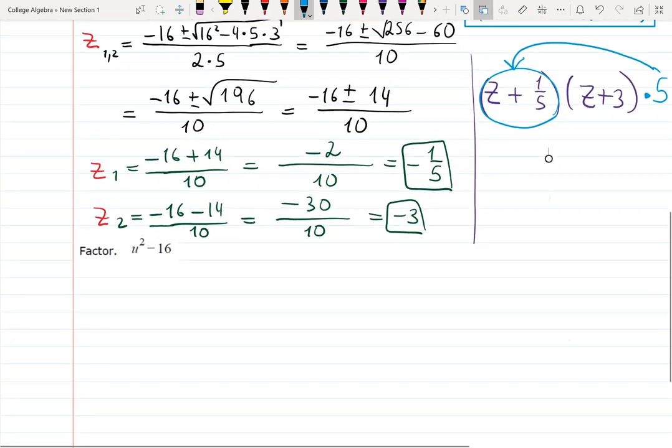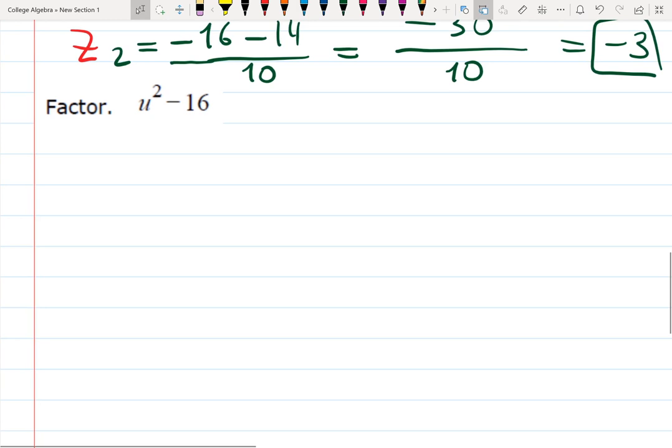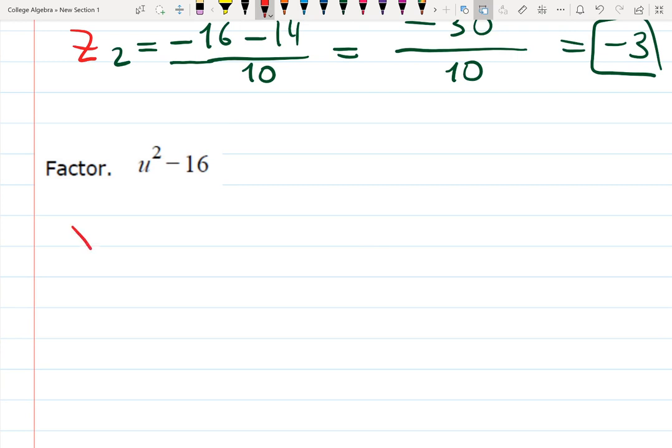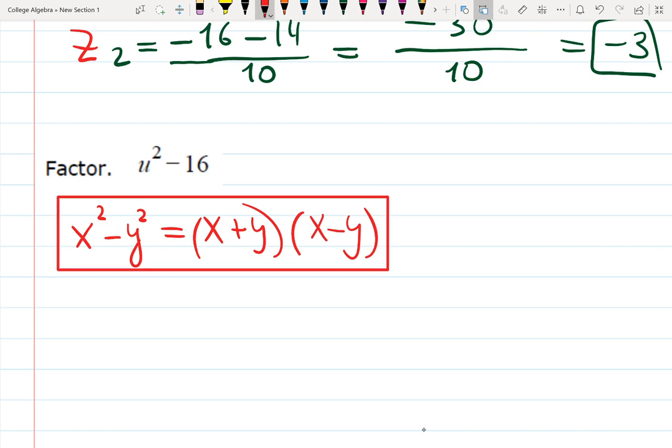Finding the last one. The last one is u squared minus 16. That's one of the favorite formulas we usually have. This is the formula of difference of squares. x squared minus y squared gives you a sum multiplied by a difference. Very nice. x squared minus y squared equals x plus y times x minus y.